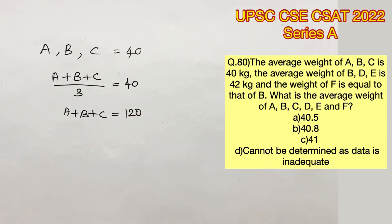Now it's also given that the average weight of B, D and E is 42 kg. Let's do the same for B, D and E. B plus D plus E by 3 is equal to 42. B plus D plus E equals 126.